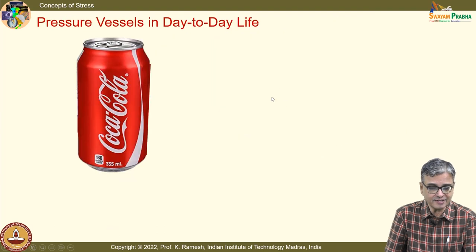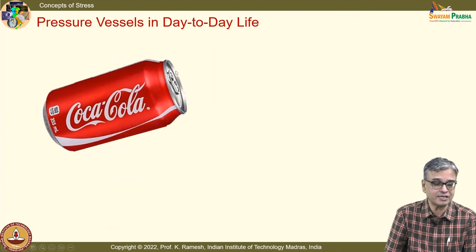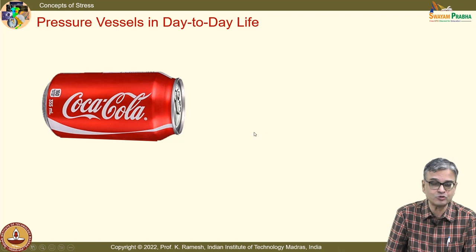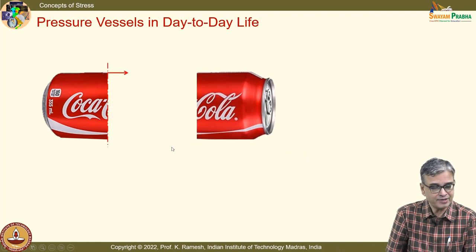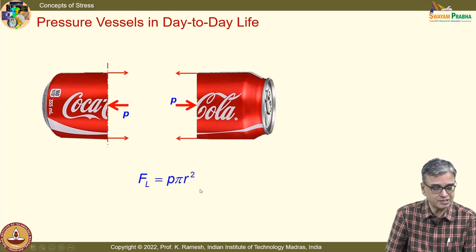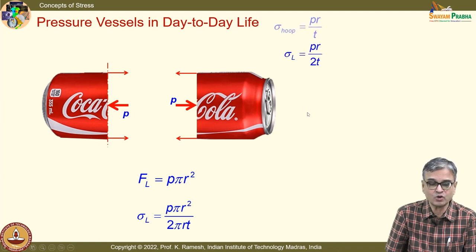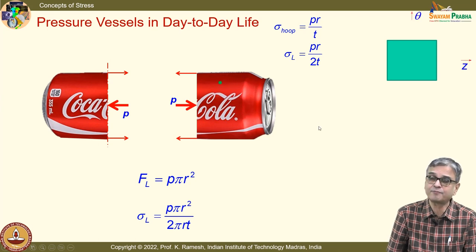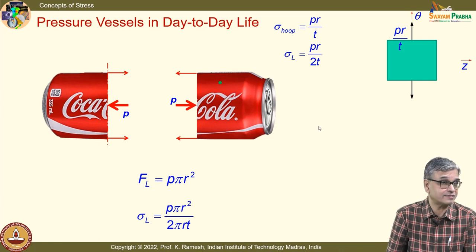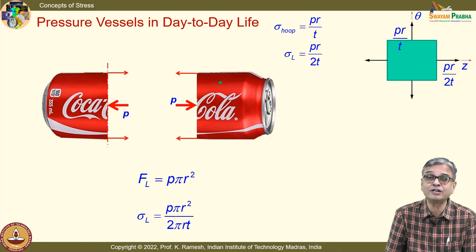For a closed pressure vessel, we must also worry about the force in the longitudinal direction. Taking a generic cross section: F_L = P·π·r², giving σ_L = P·r / 2t, while σ_hoop = P·r / t. Any generic point is a true case of a two-dimensional state of stress, since I₁ and I₂ are not zero.